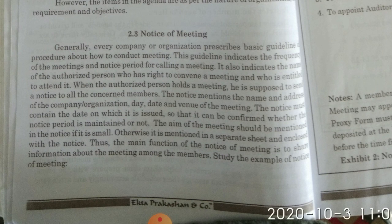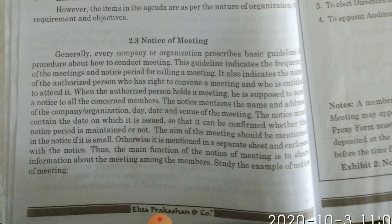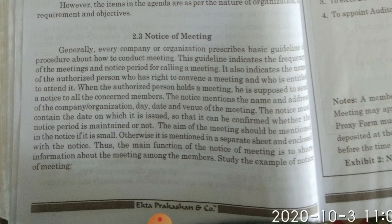The notice must mention the name and address of the company and organization, as well as the date and venue of the meeting. The notice must also contain the date on which it is issued so that it can be confirmed whether the notice period is mentioned or not. The aim of the meeting should be mentioned in the notice.